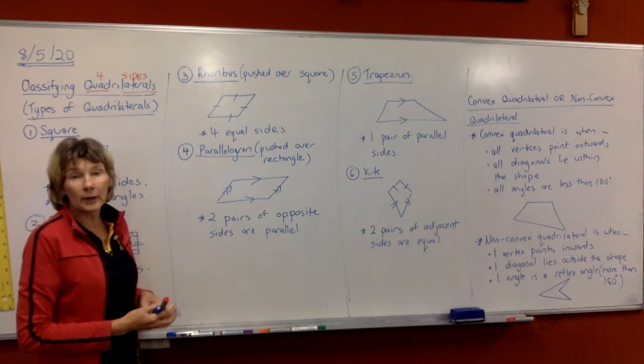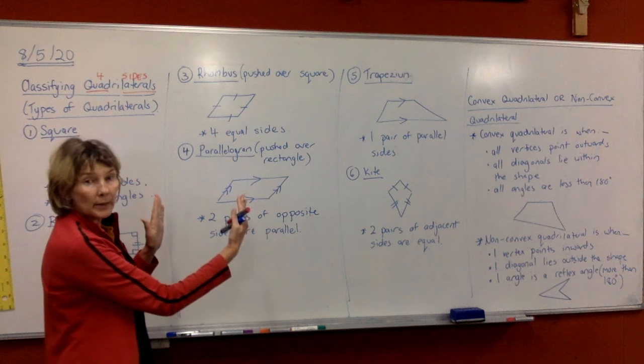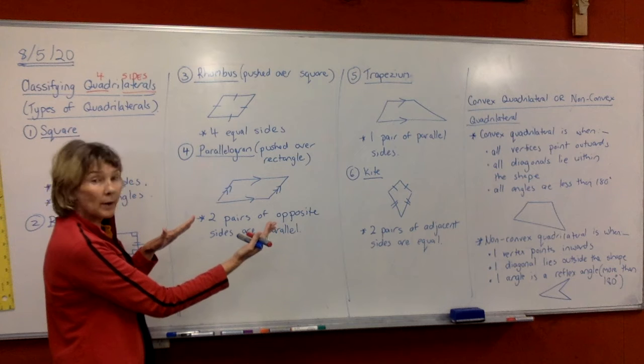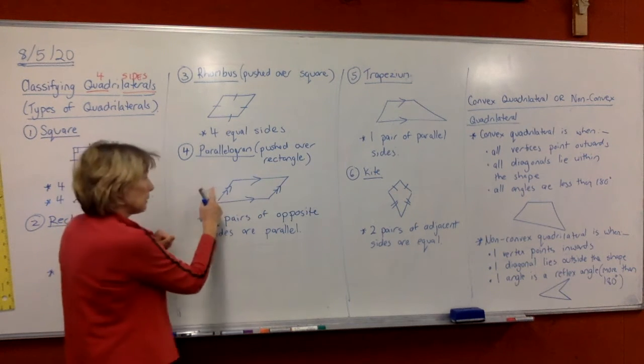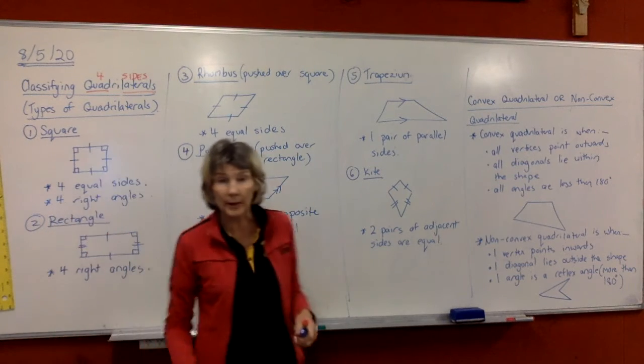In number four, a parallelogram, think of that as a pushed over rectangle. It starts as a rectangle. Push it to the side and you still have your sides being the same. So you'll have opposite sides will still be equal in both of them and they're parallel just like they were over here in the rectangle.